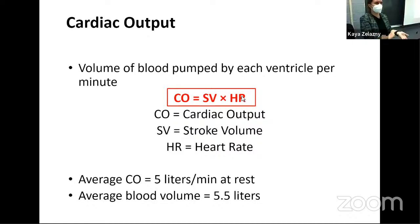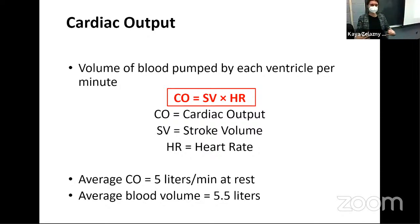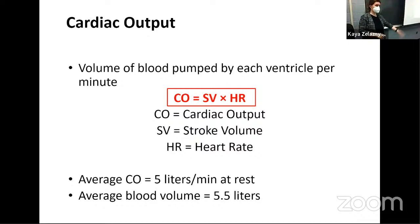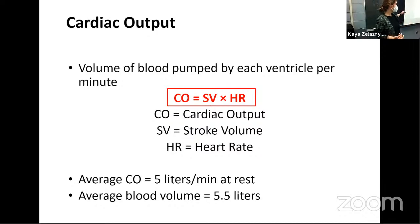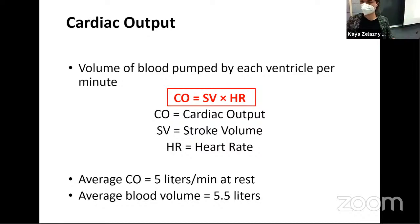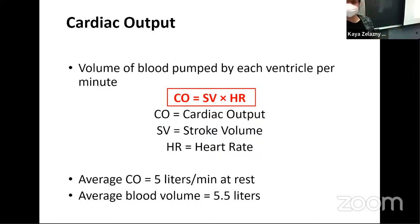On average, our resting cardiac output is approximately five liters per minute, but we're going to see a lot of variation in this cardiac output depending on different factors. For one thing, we're not always at rest. The average blood volume in your body is 5.5 liters, so this means you're circulating through almost all of that blood in a minute.